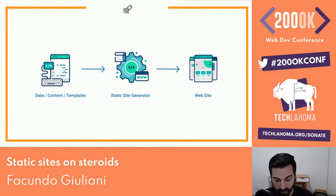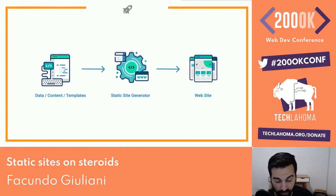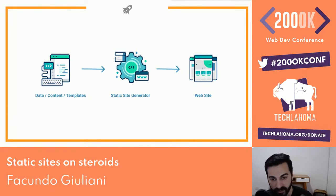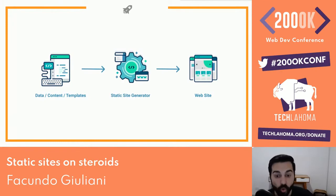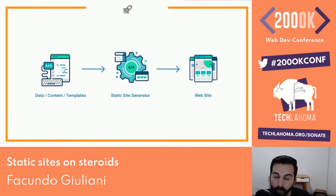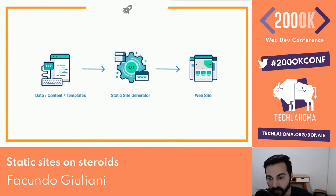There's a concept called atomic build or atomic deployment: whenever we execute the build with a static site generator, all static pages must be correct with no errors. If there's an error, the entire process rolls back. If there are no errors, we generate all static files and deploy the complete website at once. Either the complete website is generated or no files are generated at all.